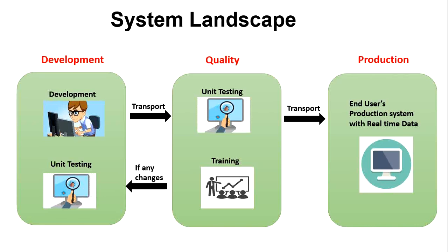Once the client is satisfied with the output, we move all the TRs to the production system. The production system is a live business system where business users use the objects with real-time data. This is where developed objects are integrated and used for business purposes. One key thing to remember: the request will always flow from DEV to Quality to Production — it will never flow backwards. This three-system landscape is also the SAP-recommended landscape.